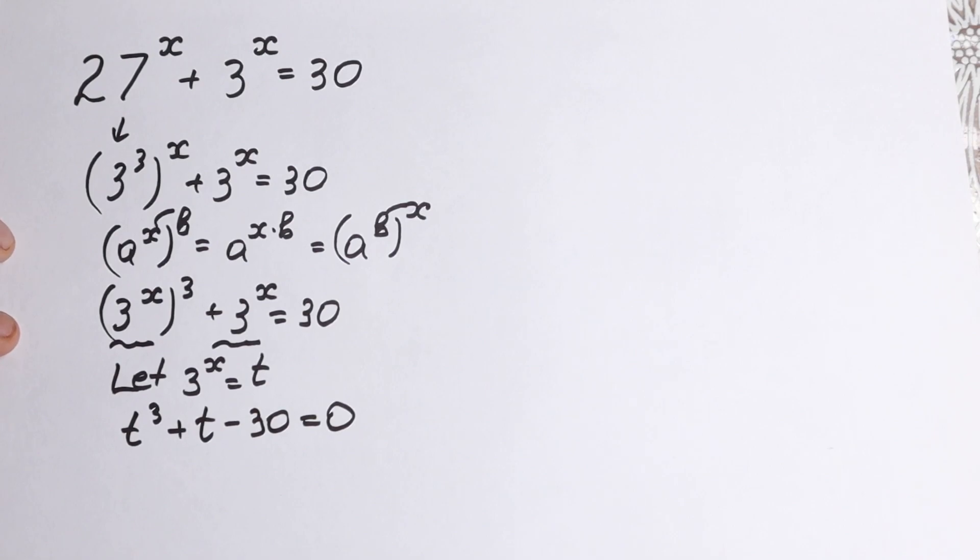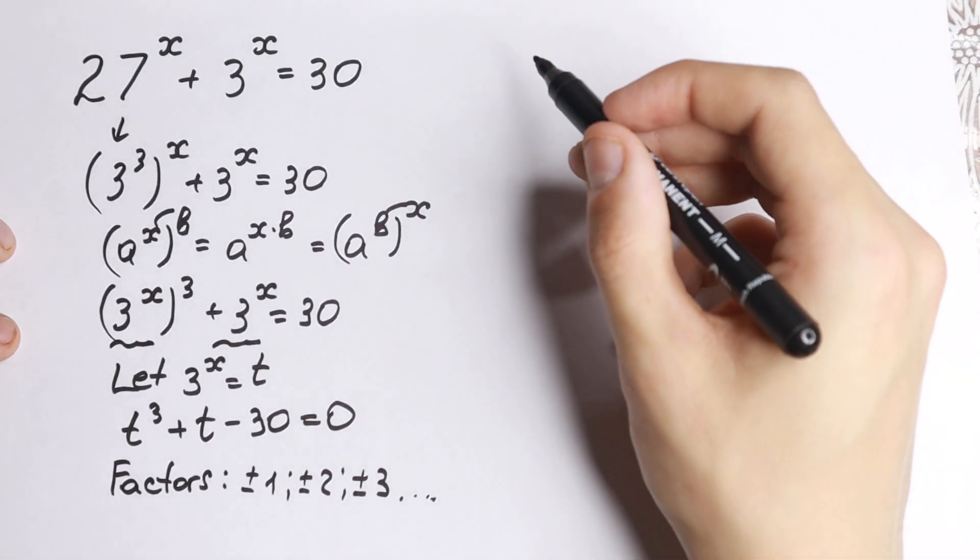So we have this equation. But how can we solve it? There are a lot of ways, but the best way, as I do every time, is to find factors of this 30. So we find positive and negative. I don't want to write all factors, but let's start with plus minus 1, plus minus 2, plus minus 3. We have a lot of factors, but let's check these.